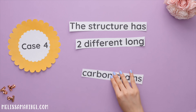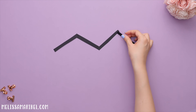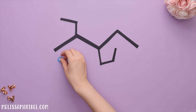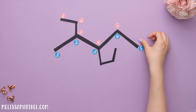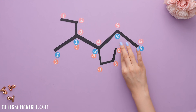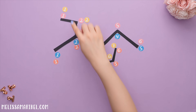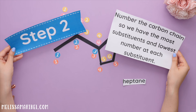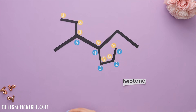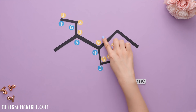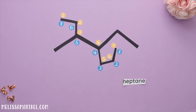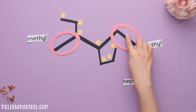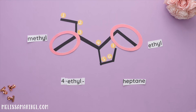Case four: the structure has two different long carbon chains. Some structures have two completely different sized carbon chains. Step one: the longest carbon chain has seven carbons — heptane. Step two: the best numbering places substituents at three and four rather than four and five, since we always want the lowest numbers. Step three: we have a methyl group at three and an ethyl group at four, arranged in alphabetical order, giving us the correct name.